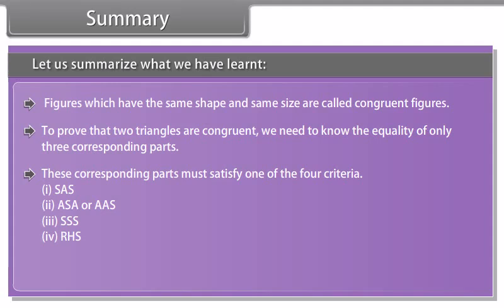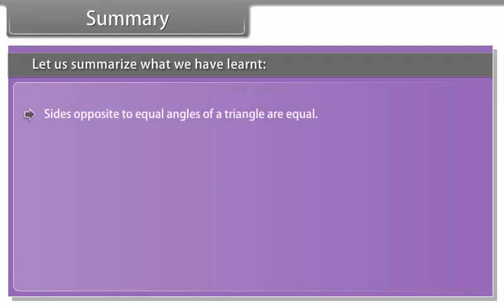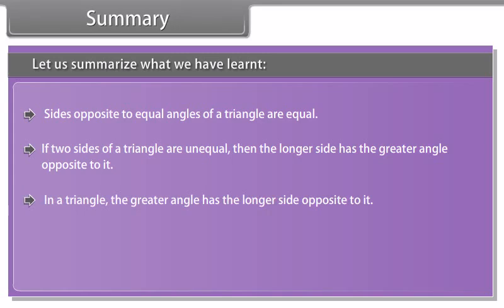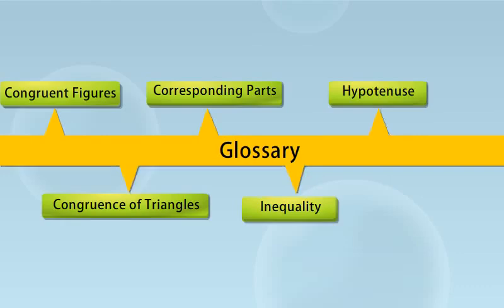Summary: Let us summarise what we have learnt. Figures which have the same shape and same size are called congruent figures. To prove that two triangles are congruent, we need to know the equality of only three corresponding parts. These corresponding parts must satisfy one of the four criteria: 1. SAS, 2. ASA or AAS, 3. SSS, 4. RHS. Angles opposite to equal sides of a triangle are equal. Sides opposite to equal angles of a triangle are equal. If two sides of a triangle are unequal, then the longer side has the greater angle opposite to it. In a triangle, the greater angle has the longer side opposite to it. The sum of any two sides of a triangle is greater than the third side.